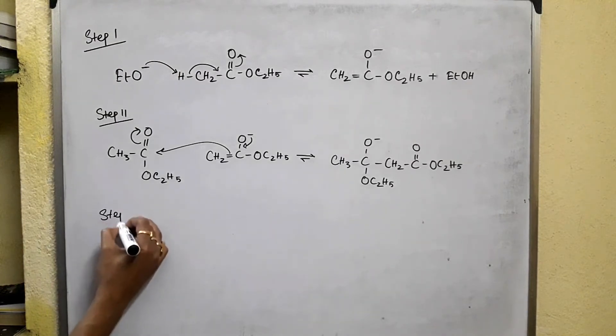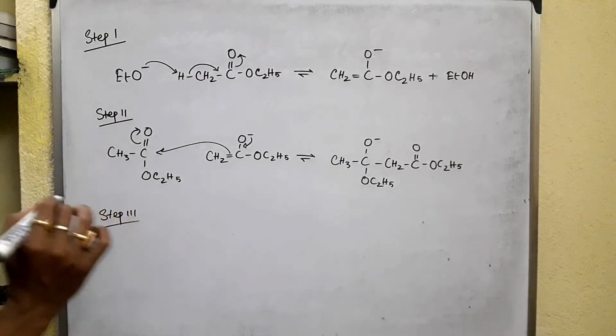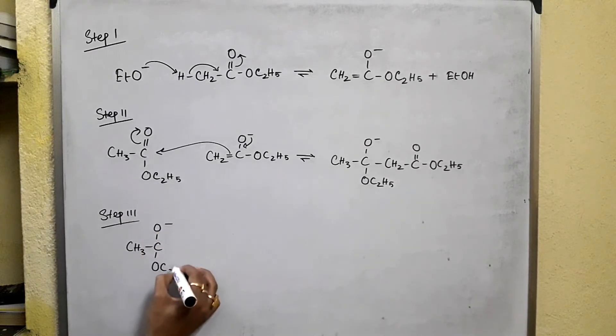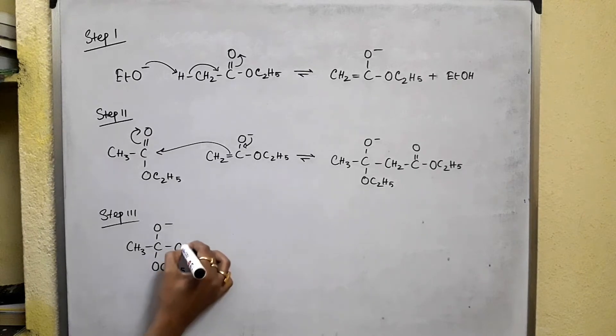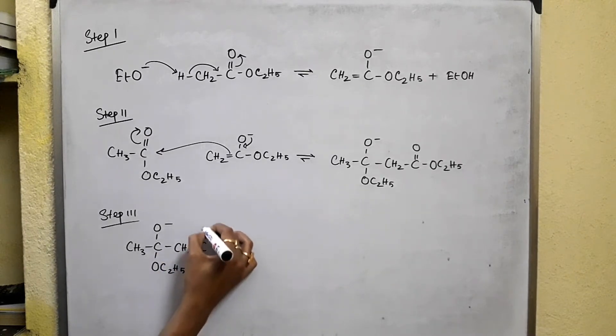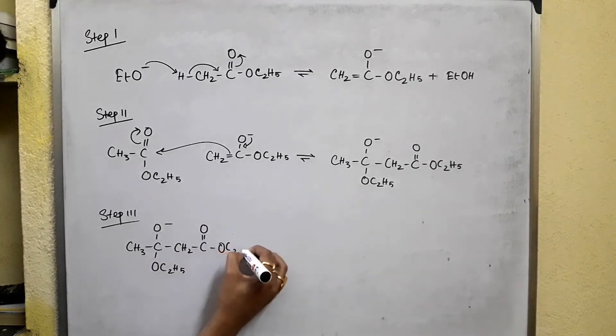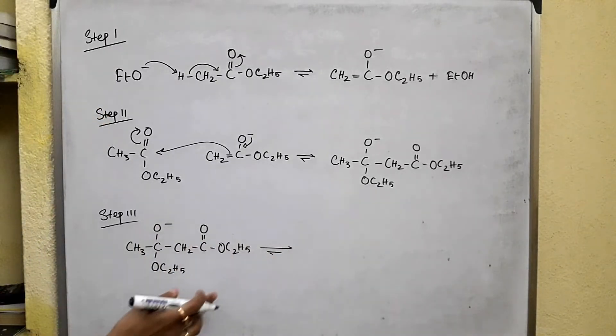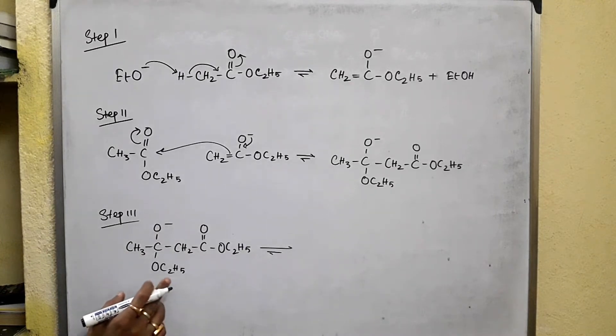Now step 3, where something different happens. This anion is having the leaving group OC₂H₅. So what happens in step 3?